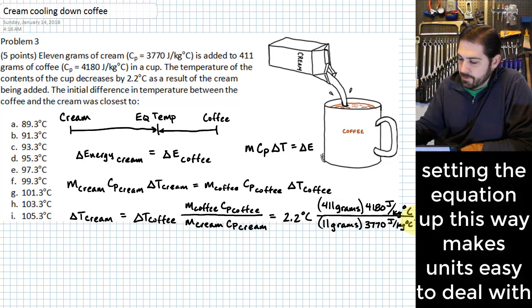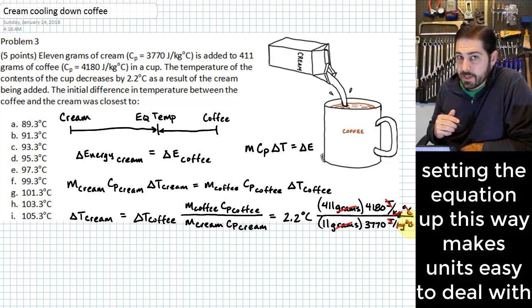One of the strengths of first expressing this equation all in terms of variables like this is that without doing really any unit conversions, we can just go through and eliminate all of these units that we would have had in there, and it allows us to immediately calculate for the change in temperature of the cream.